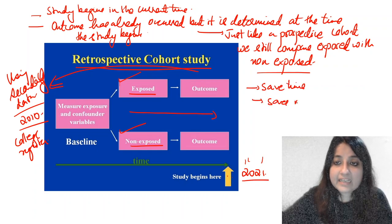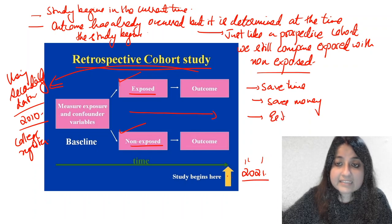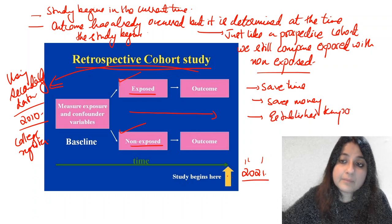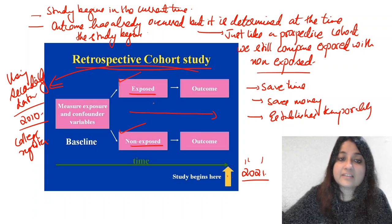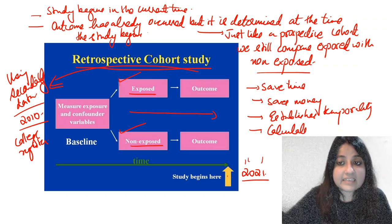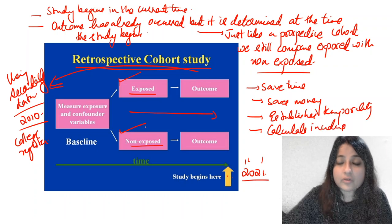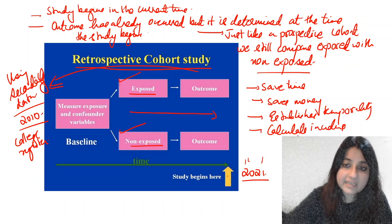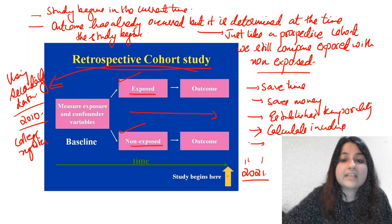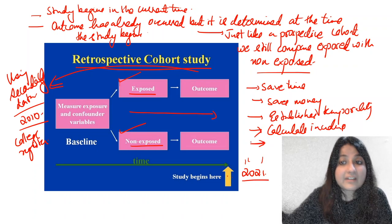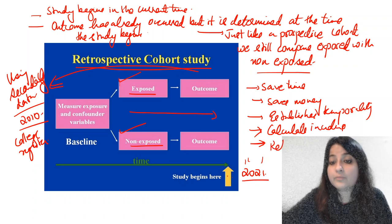Does it establish temporality? Yes, because you are still comparing exposed with non-exposed. Can it calculate incidence? Yes, it can still calculate incidence — because you went back in time, divided the data into exposed and non-exposed, and determined the outcome at the present time. So you can still calculate the incidence of the disease.